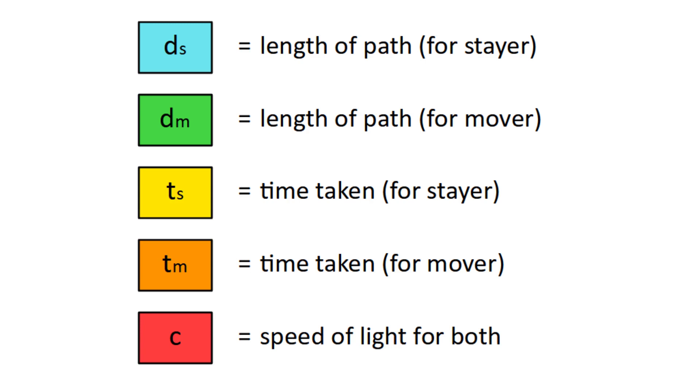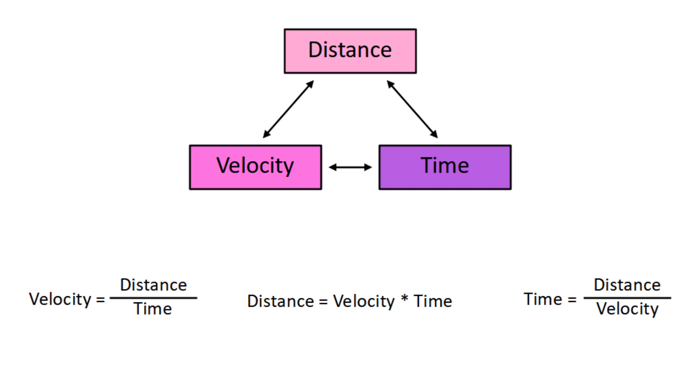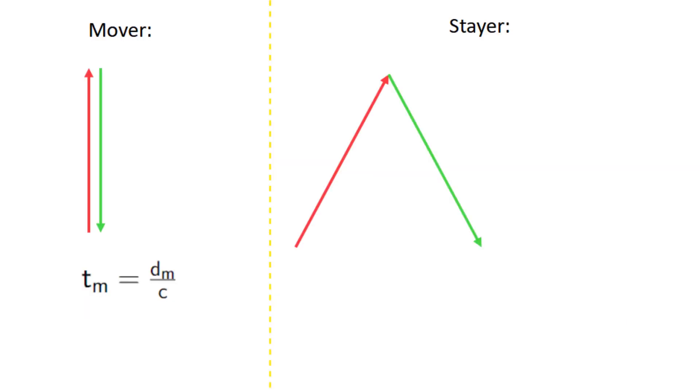Now, remember when I said time equals distance over velocity? Well, if we apply that to these variables, we get the equations tm equals dm over c, and ts equals ds over c.